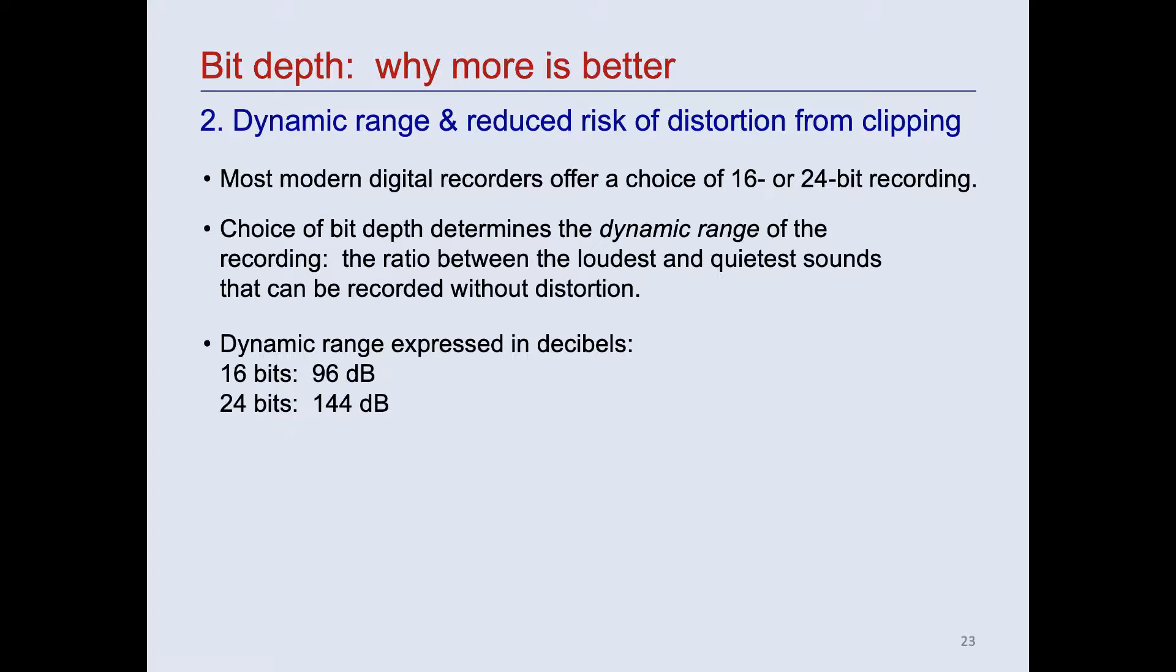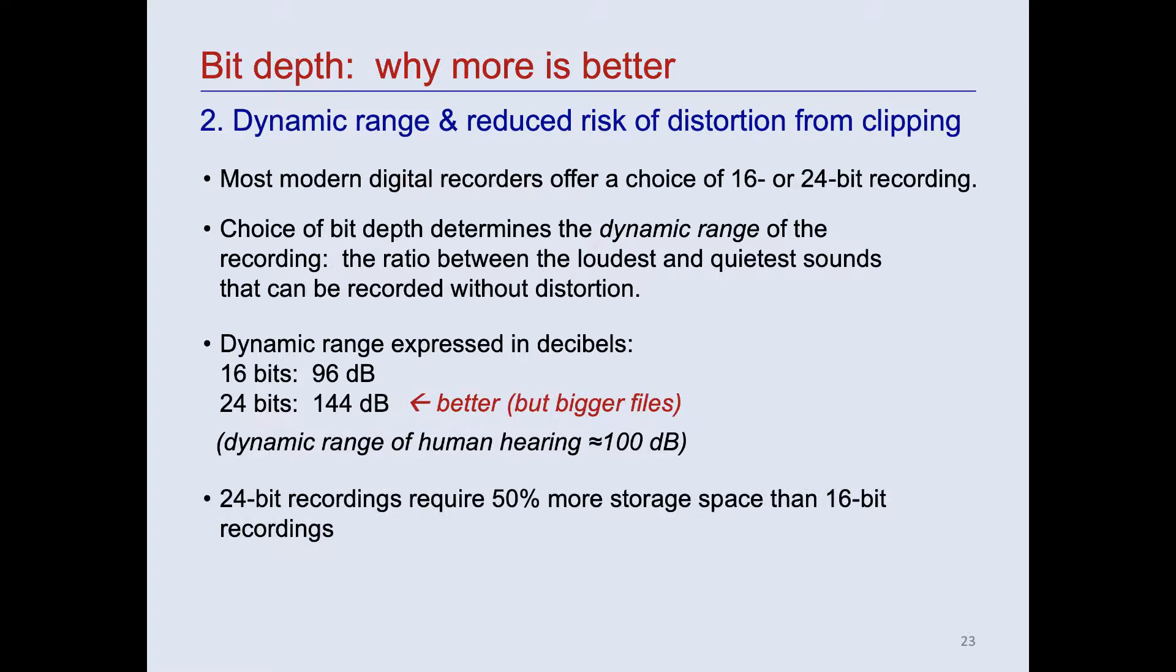Greater dynamic range is always preferable. To put those numbers in perspective, the dynamic range of human hearing, from the quietest sound we can hear to potentially dangerous levels of sound, is around 100 decibels. However, there is a cost to having this greater dynamic range, which is that 24-bit recordings require 50% more storage space than 16-bit recordings.